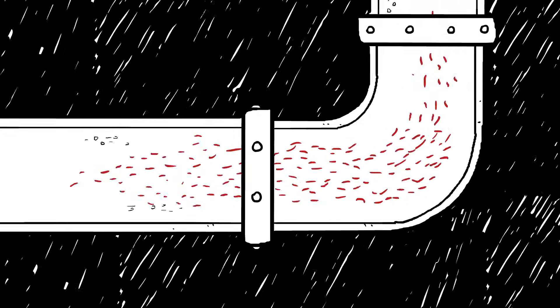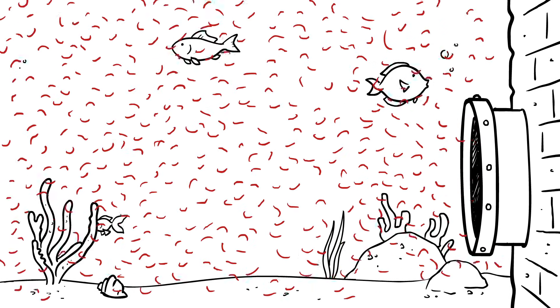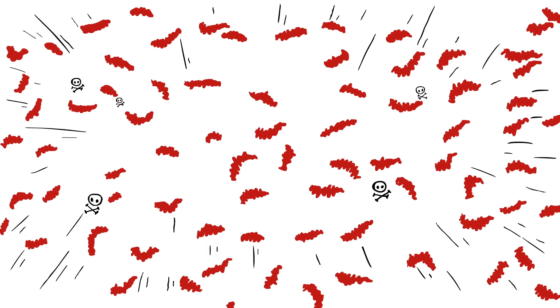These fibers are so tiny, water treatment plants don't catch them all, so they wind up in rivers, lakes, and even the ocean. When they reach the ocean, they act like sponges sucking up other pollutants around them.